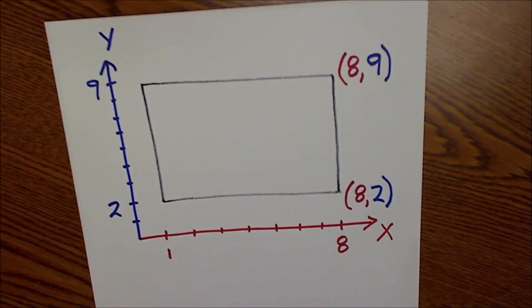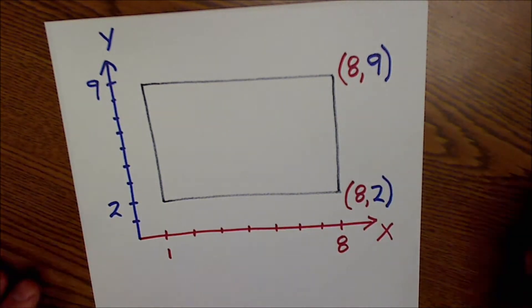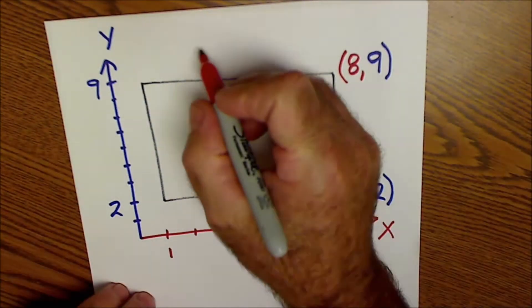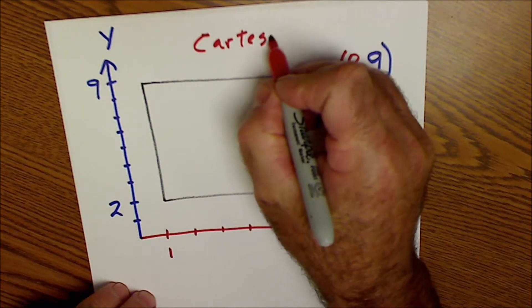Okay, so let's get started with Cartesian coordinates. Cartesian coordinates were invented by this guy named Rene Descartes. That's why it's called Cartesian. So it's Cartesian coordinates named after him. I think it must have been about 1600 he did that.